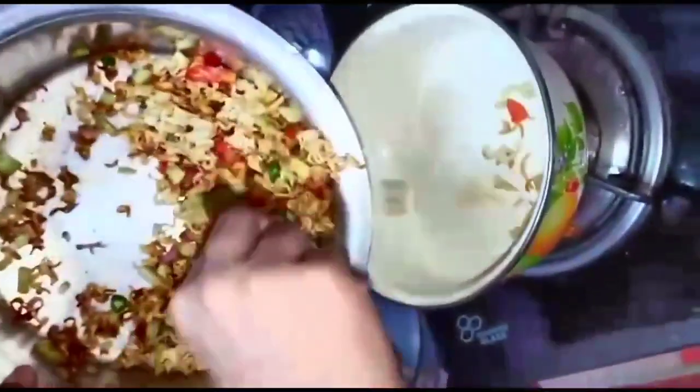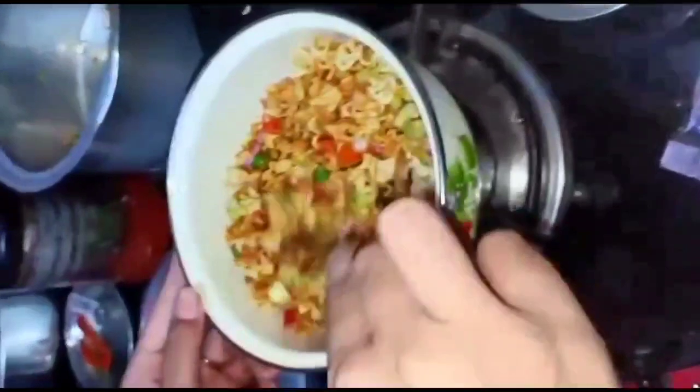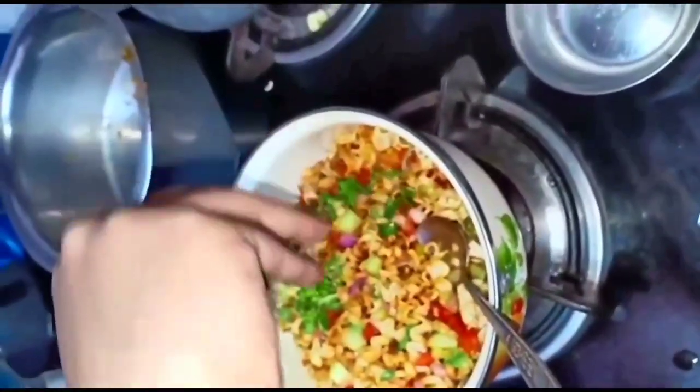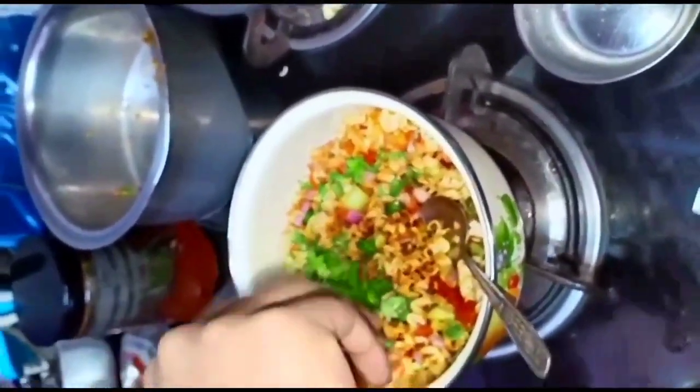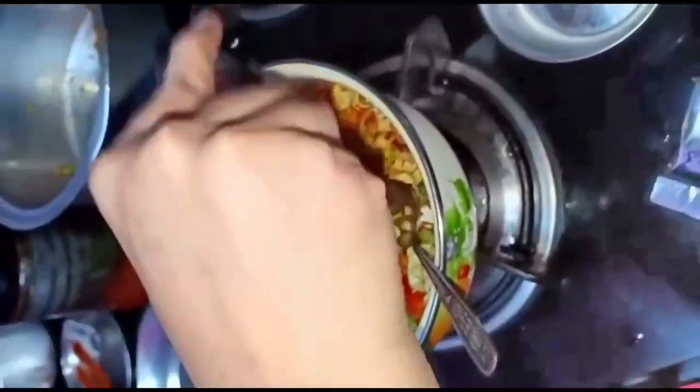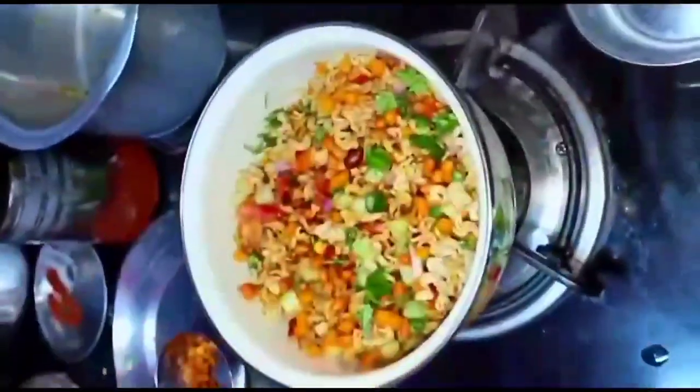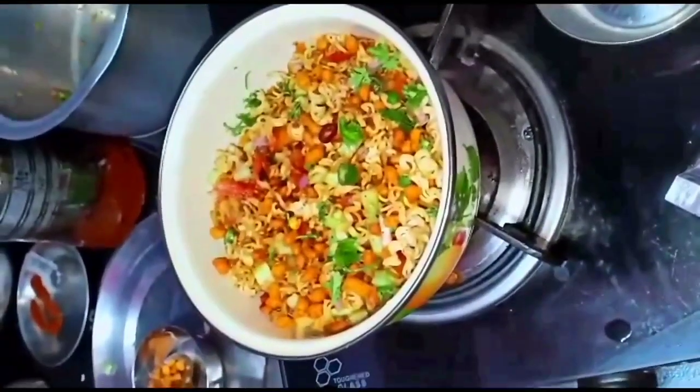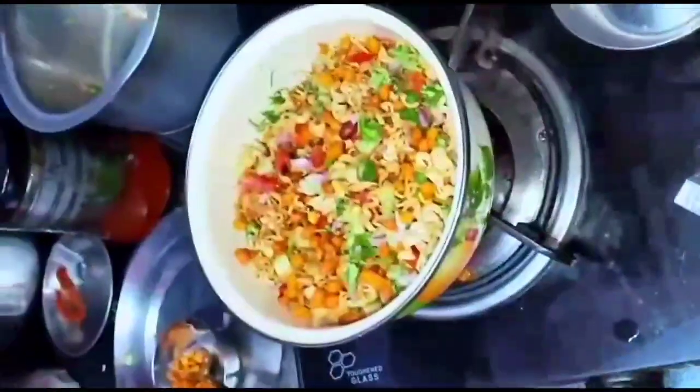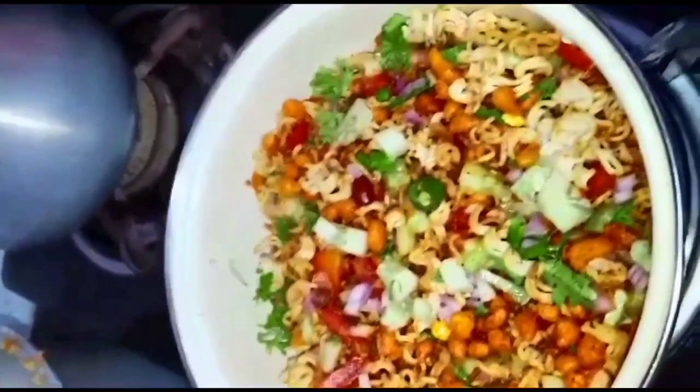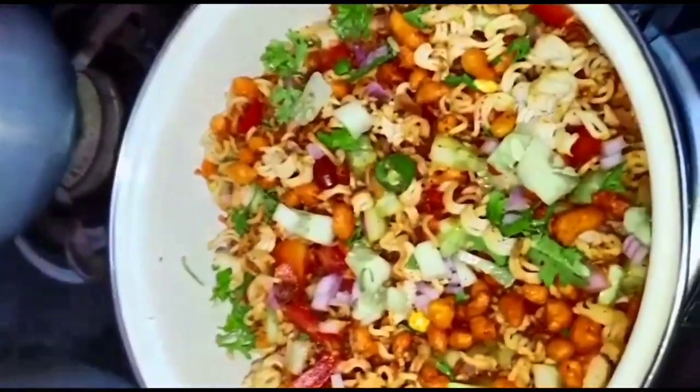Start in the bowl. Now add coriander leaves and karabundi, and chop onion in the top and cucumber. Here is the quick and easy recipe how to prepare Maggi Bhel. Hope you people liked it.